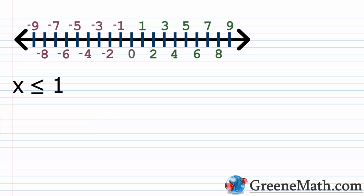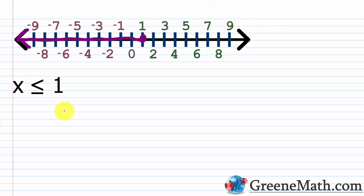For x is less than or equal to 1: graphically, at 1 we place a bracket facing left and shade everything to the left. Because it's a non-strict inequality, 1 is included. Some textbooks use a filled-in circle instead of the bracket — it means the same thing. In interval notation, we write (−∞, 1], using a bracket next to 1 to show it's included, and always a parenthesis with negative infinity.